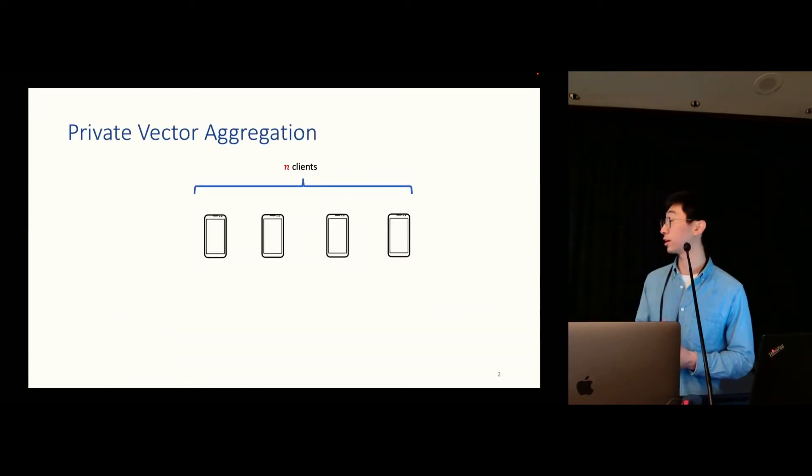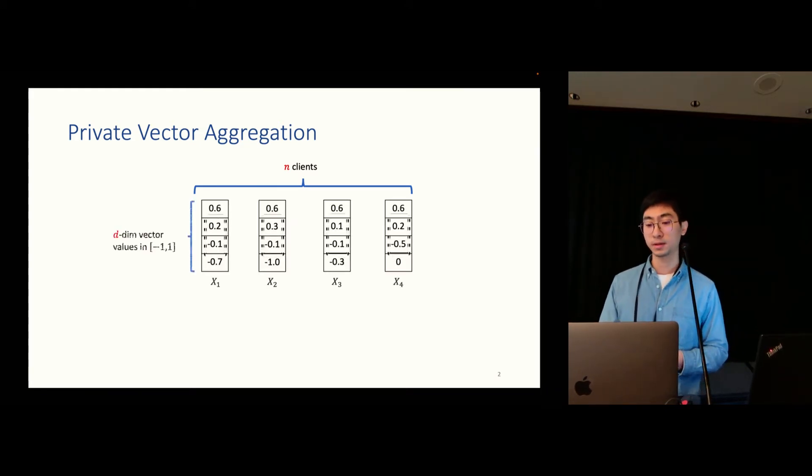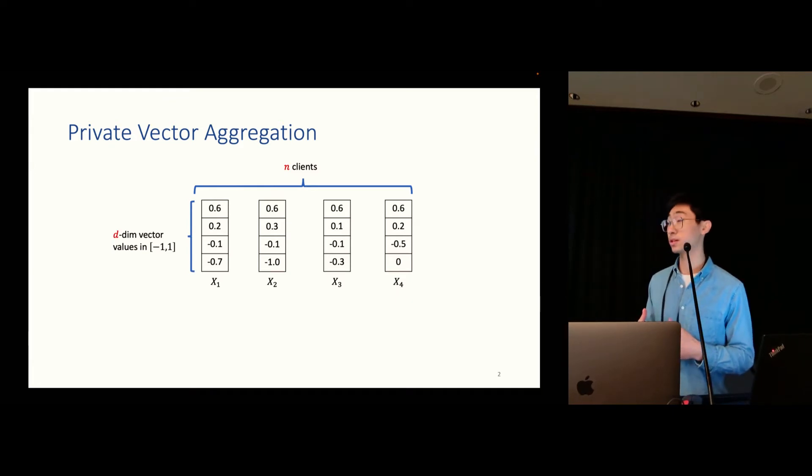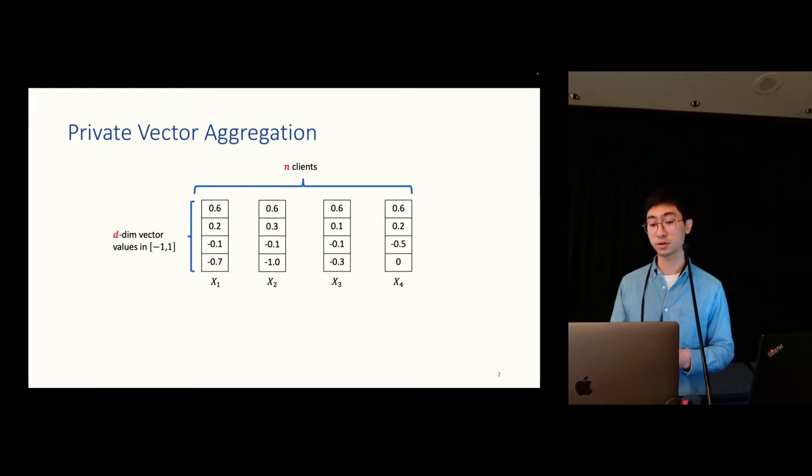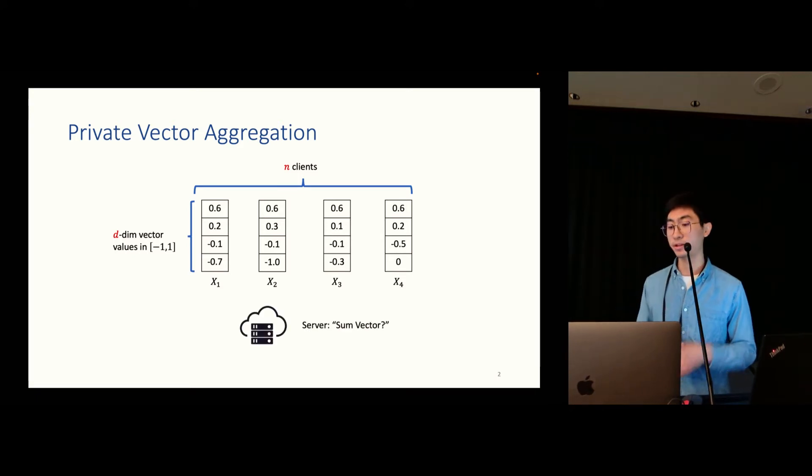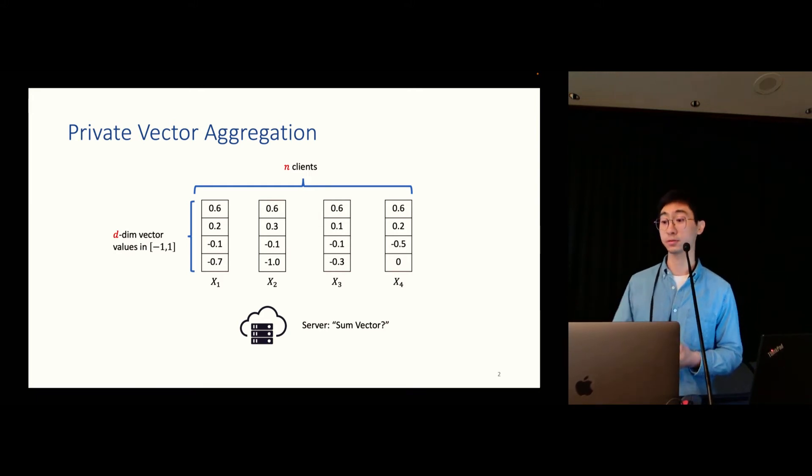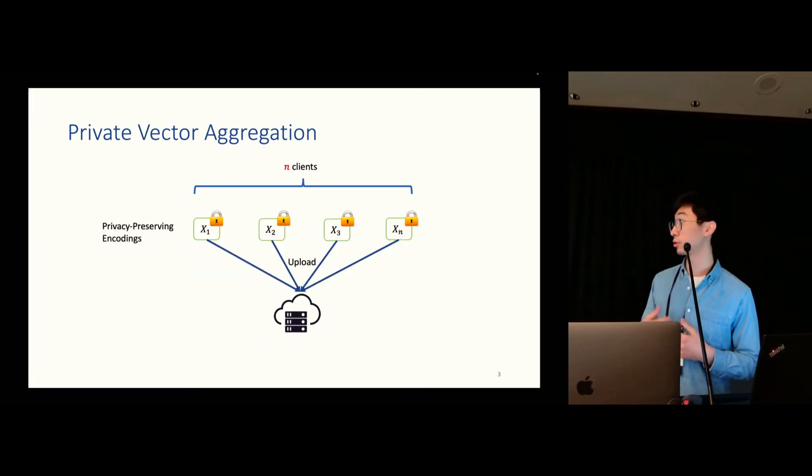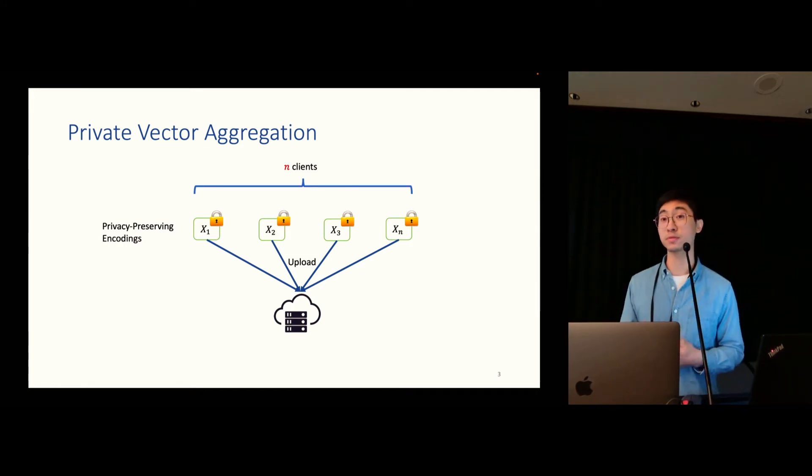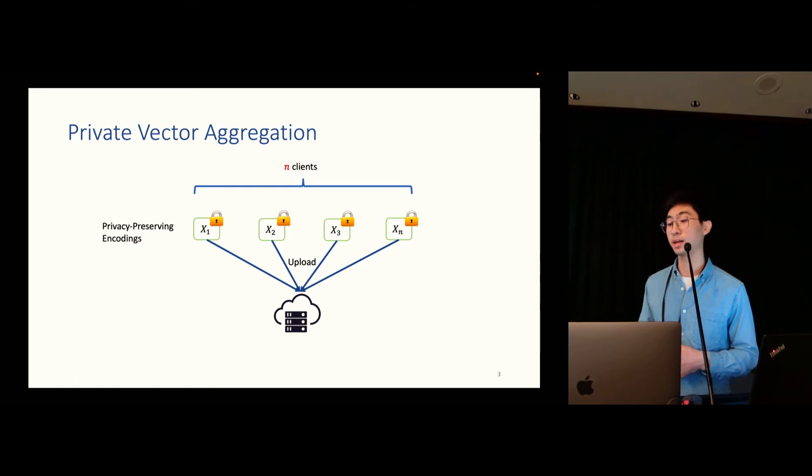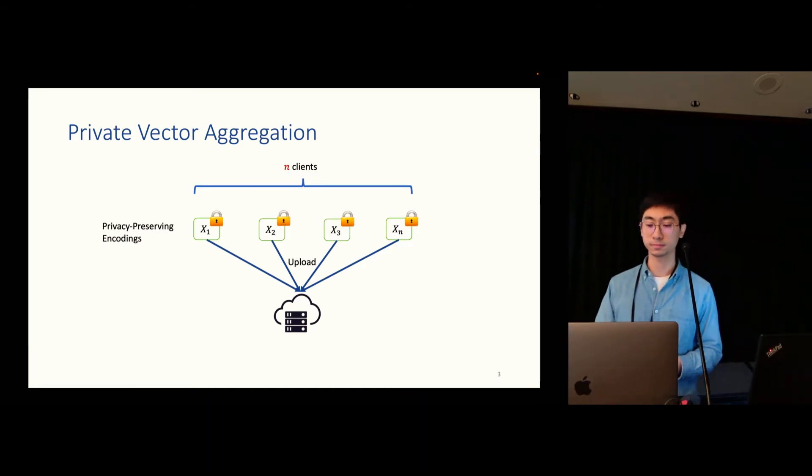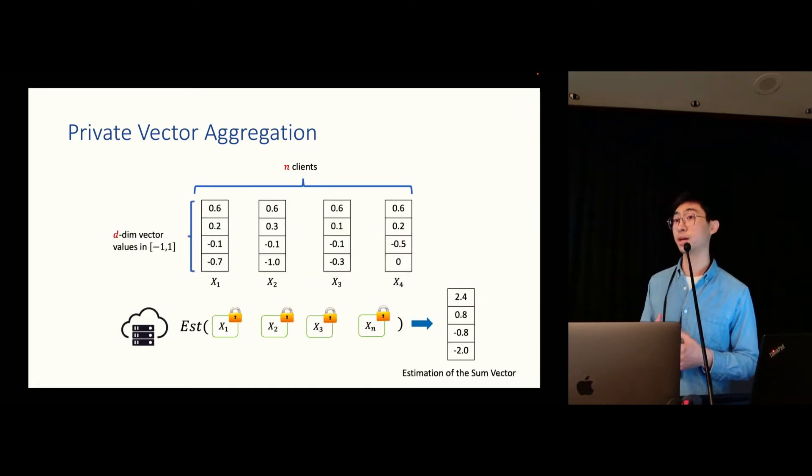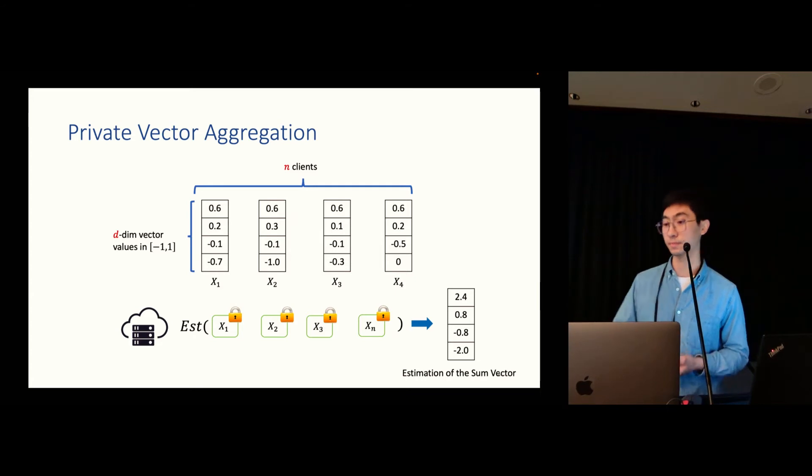So what is private vector aggregation? Well, imagine that you have n clients. Each client could have some local private data and then they represent their data using d-dimensional vector and we assume those values are in negative one and one. And now the server is trying to aggregate those vectors and figure out what is the summation of those vectors.